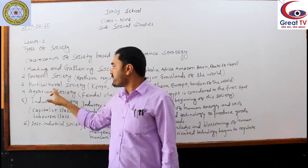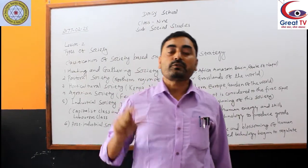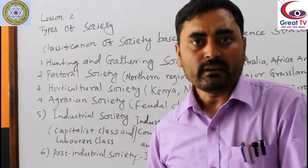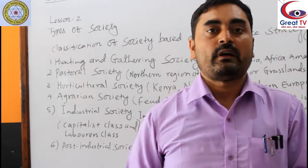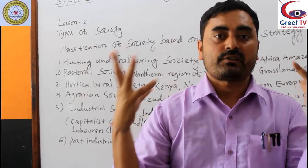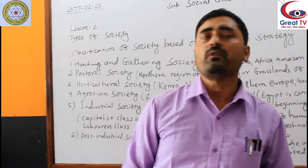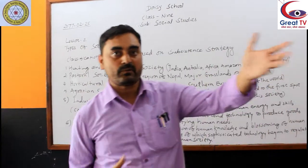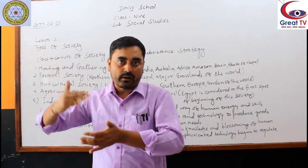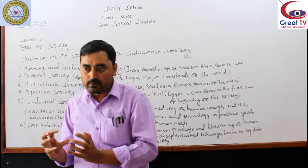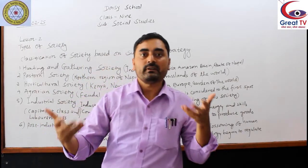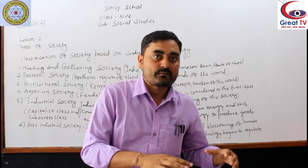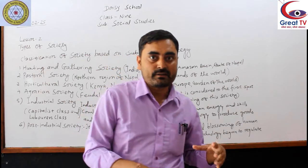Third one — horticultural society. The society depending on cultivating fruits and vegetables is called horticultural society. As I said in the hunting and gathering age, people used to collect different edible fruits from the forest. Later they started growing or cultivating such fruits when their permanent settlement started. Permanent settlement started in the society, and then they gradually started with cultivation.